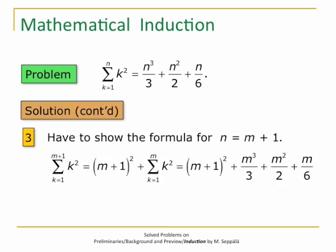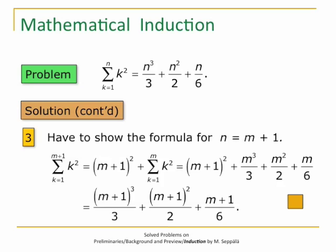This right-hand side can be simplified, and it really is M plus 1 cubed over 3 plus M plus 1 squared over 2 plus M plus 1 over 6. Hence it is of the desired form, proving the formula.